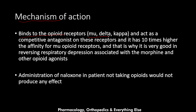Naloxone binds to opioid receptors — mu, delta, and kappa — and acts as a competitive antagonist on these receptors. It has 10 times higher affinity for the mu receptors, so it favors mu over kappa and delta. This is why it is very effective at reversing the respiratory depression associated with morphine and other opioid agonists, since morphine also favors mu receptors.